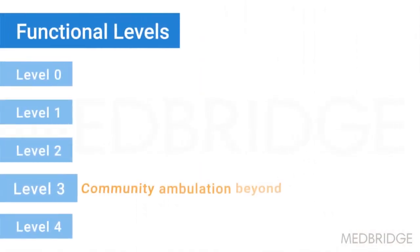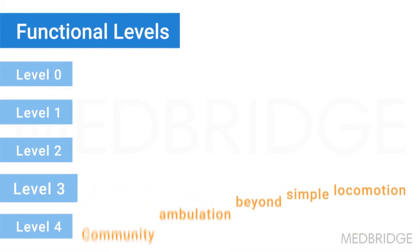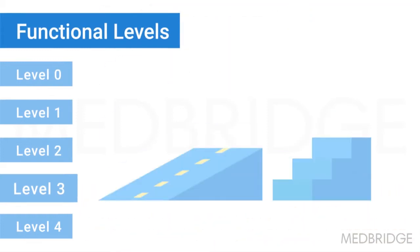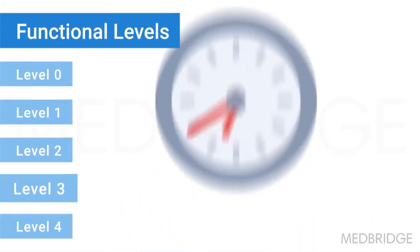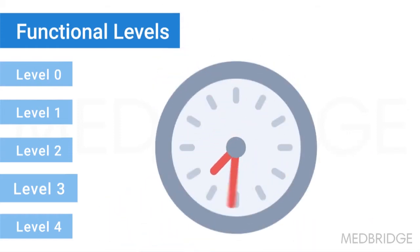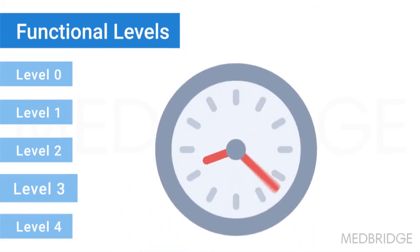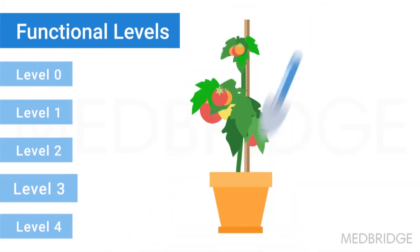Functional level 3 is community ambulator beyond simple locomotion. These patients will use their prosthetic limb within the community over even and uneven ground. They can ascend and descend ramps and stairs, and they'll be able to wear their limb for the majority of their day, to include different physical activities.